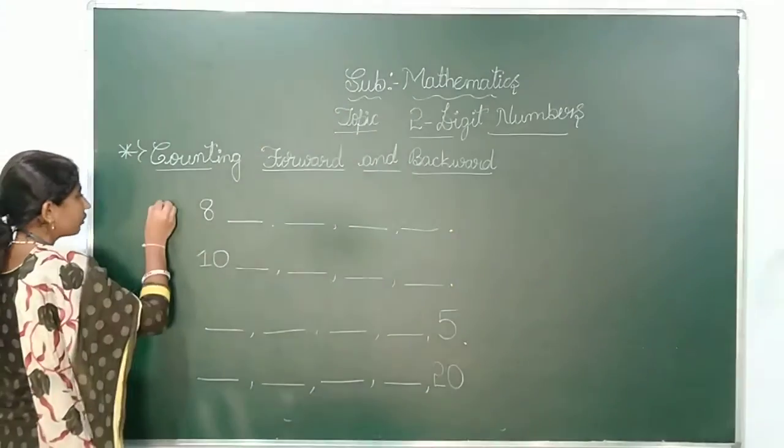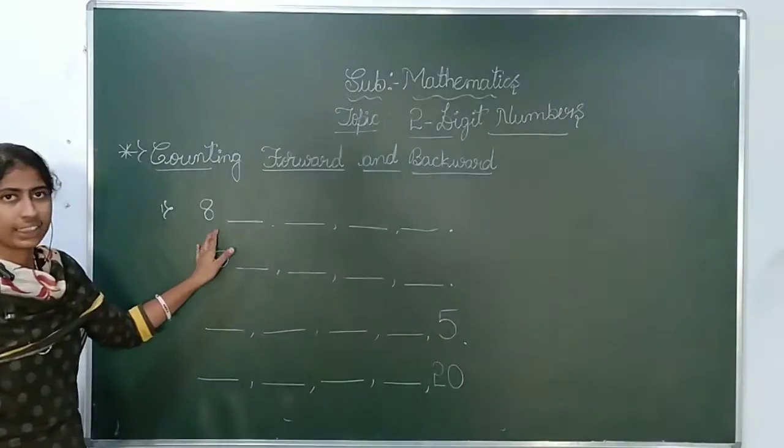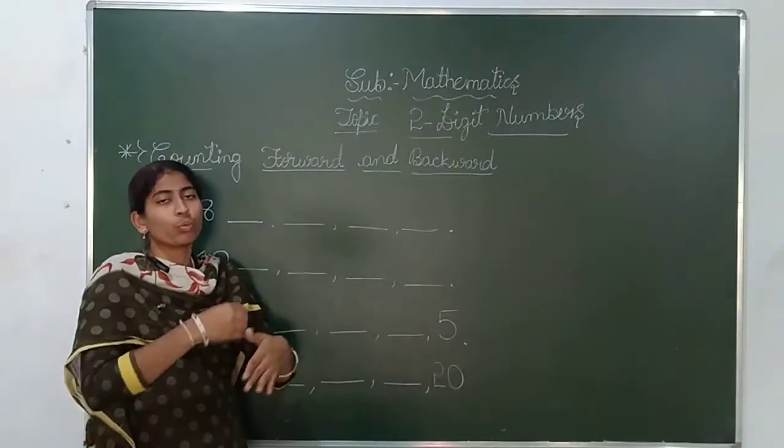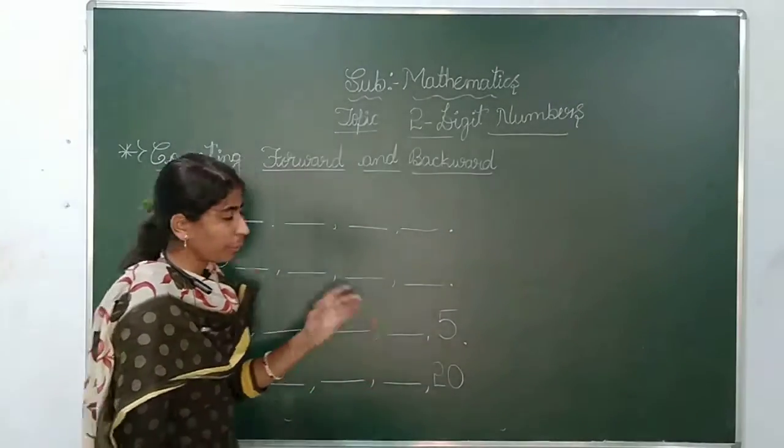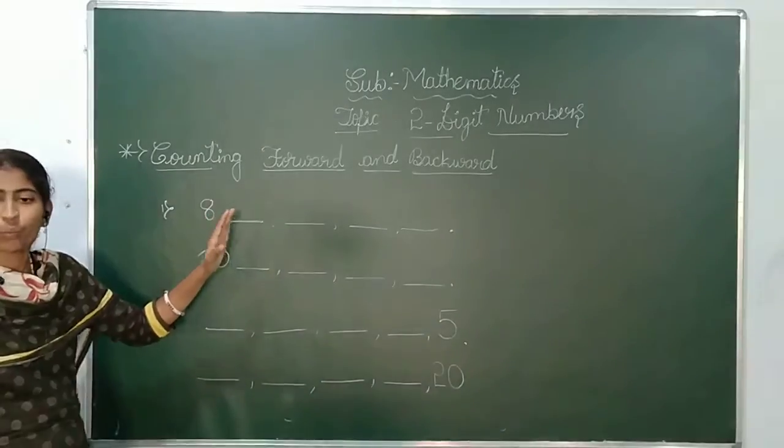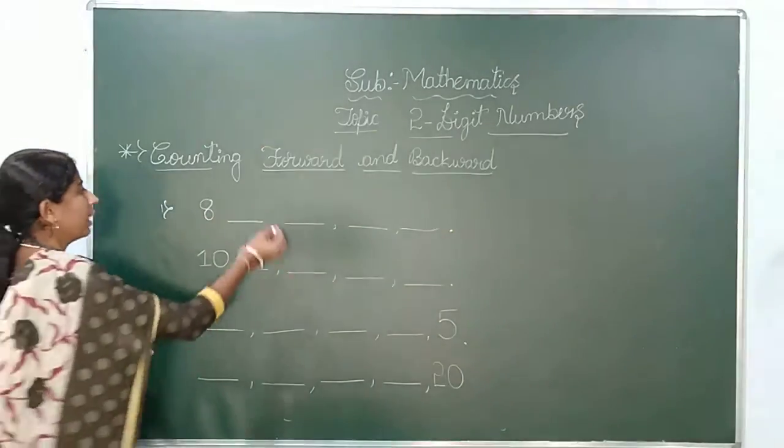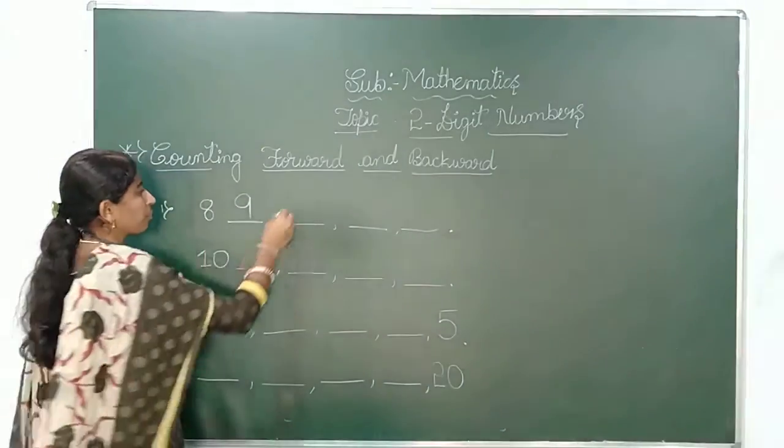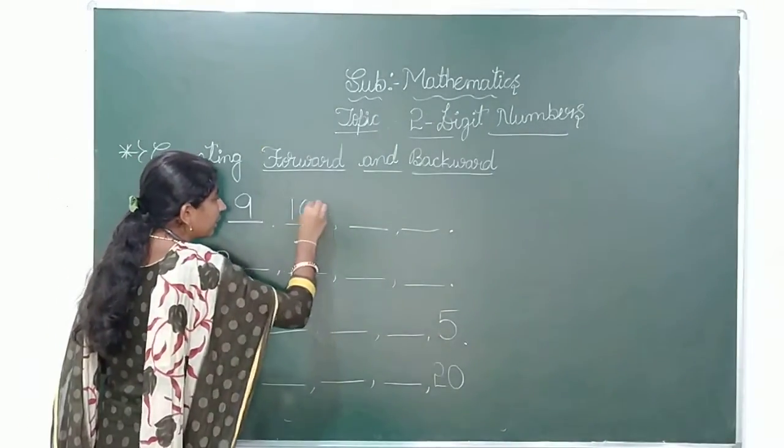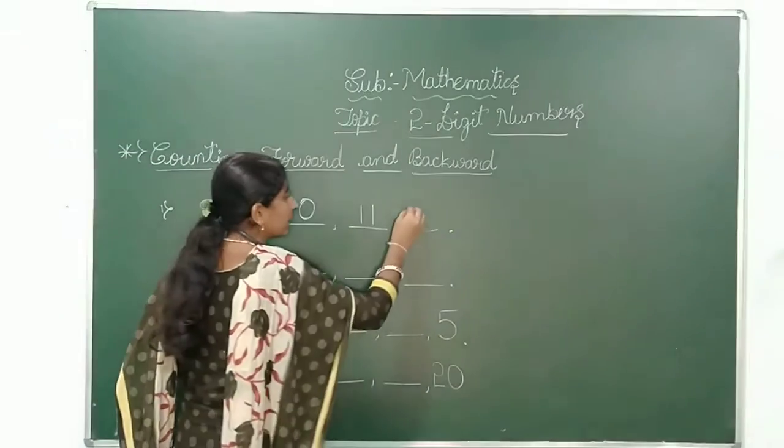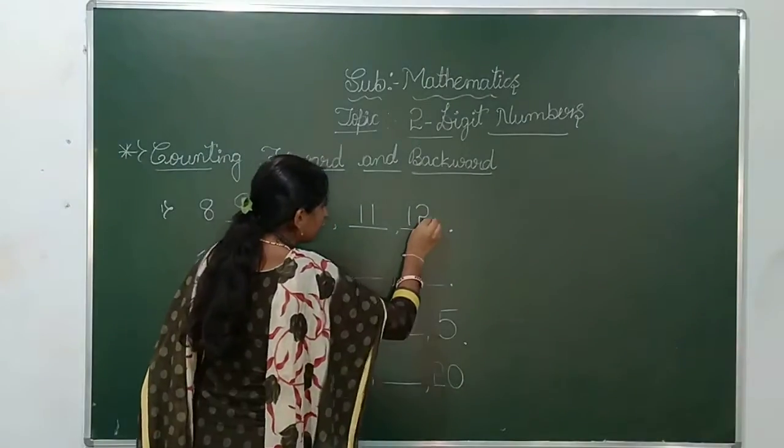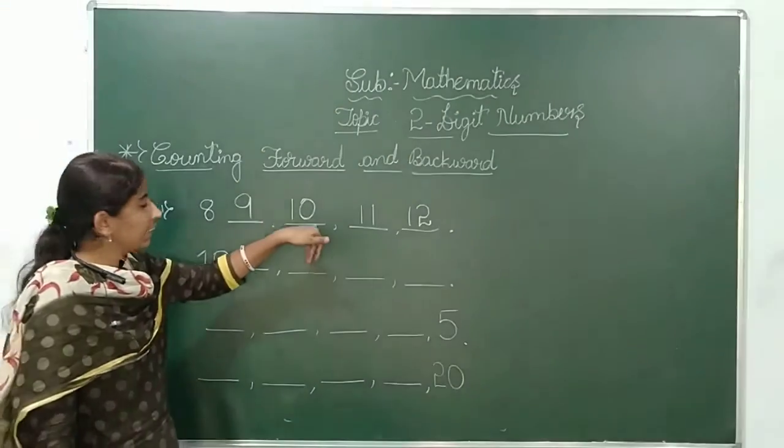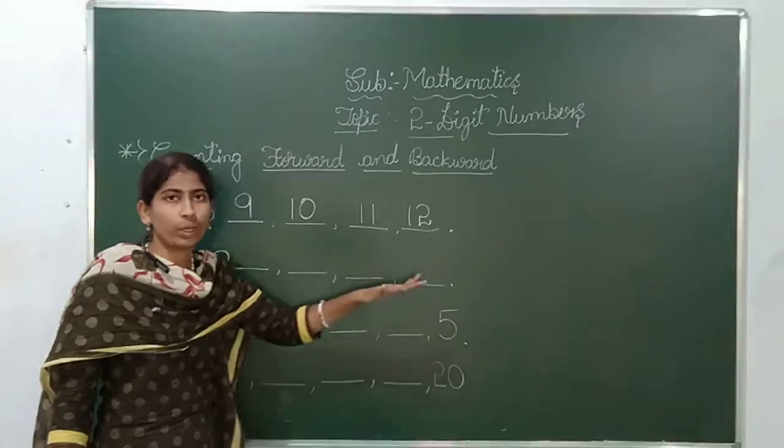Here I given the first example: 8. Here there is a number 8, and there are four blanks. We should count the numbers forward. After the 8, which number will come? After the 8, it is 9. After the 9? 10. Then 11, then 12. See, 8 forward number is 9, 9 forward is 10, 10 is 11, and 11 is 12. Have you understood this?